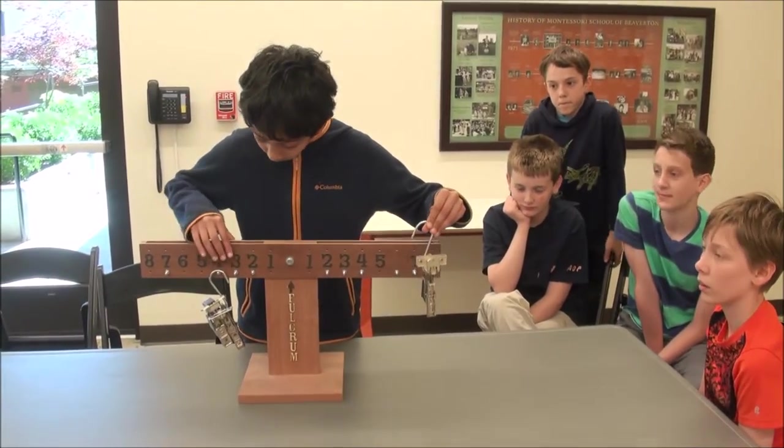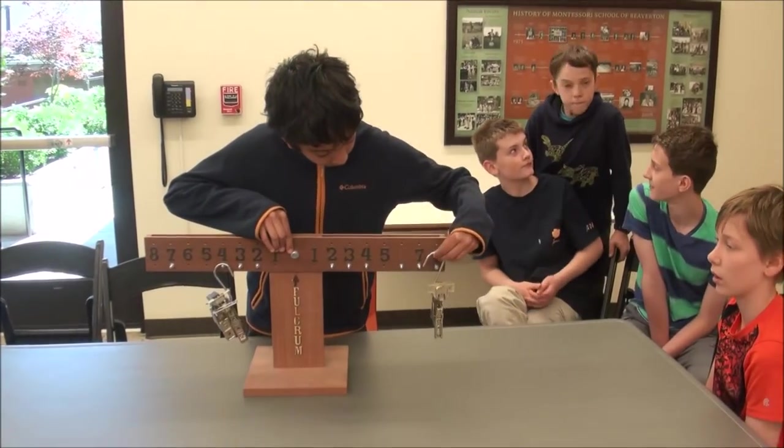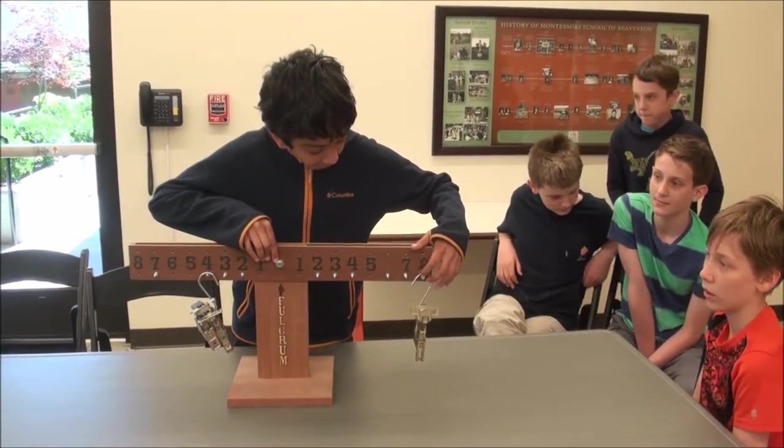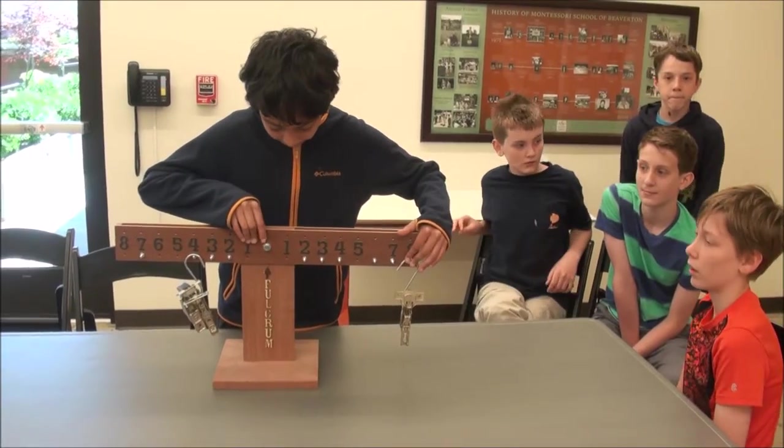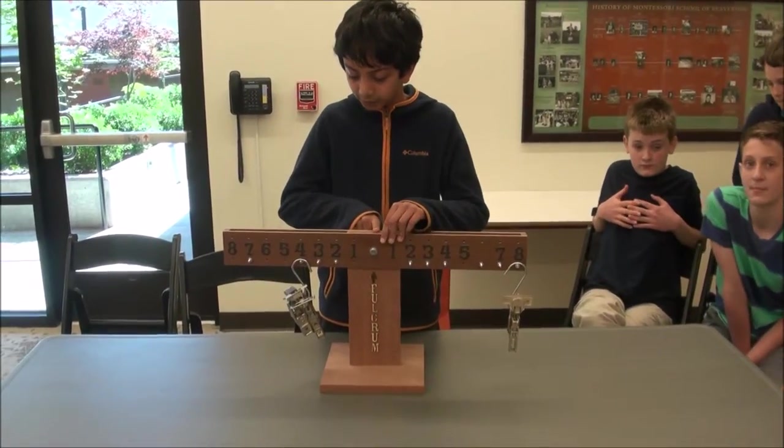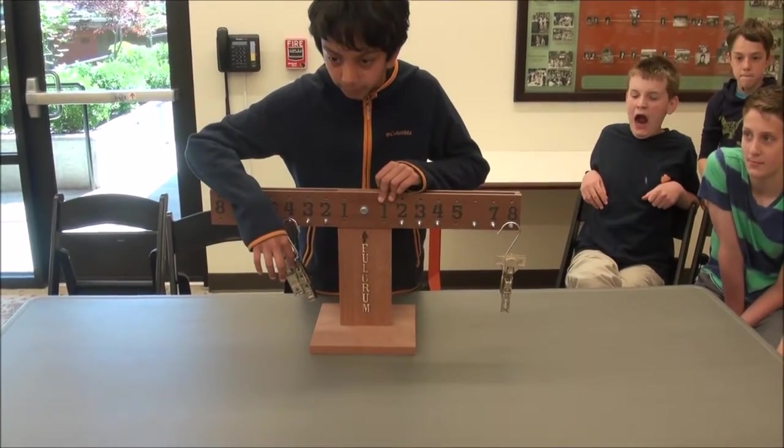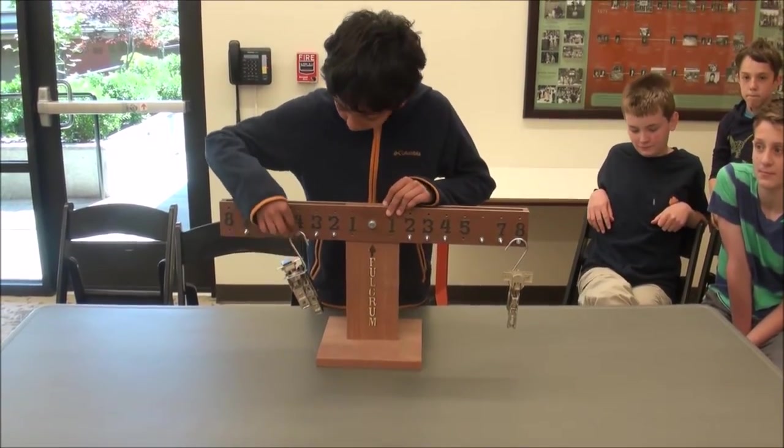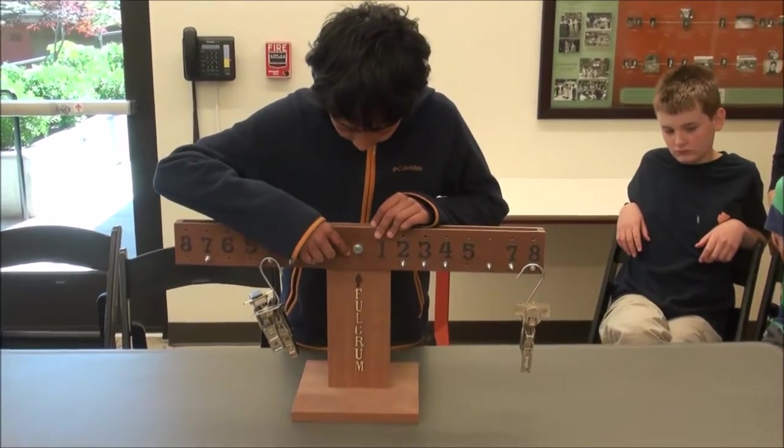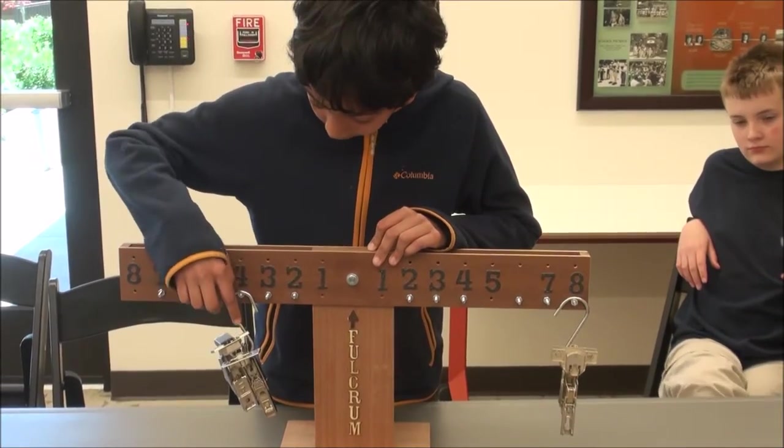Because this is 4 inches from the fulcrum, I'll put this 8 inches from it so it stays stable. The formula is weight times distance equals weight times distance. So let's say this is 2 pounds because there's two, and this is 4 inches from the fulcrum. You say 4 times 2 equals 8, right?